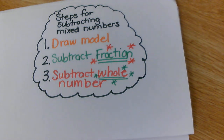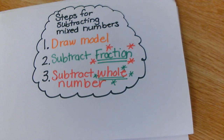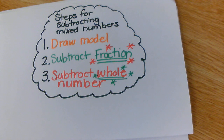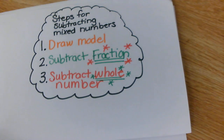We're going to talk about steps for subtracting mixed numbers. Step one, I'm always going to draw a model. Step two, I'm going to subtract the fraction. Step three, I'm going to subtract the whole number. So let's look at an example.